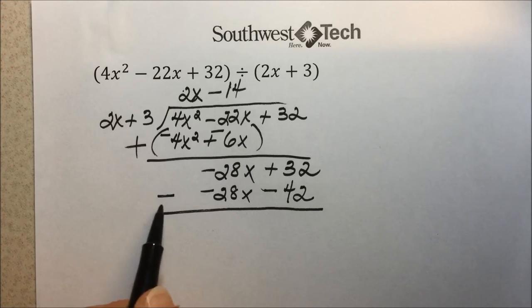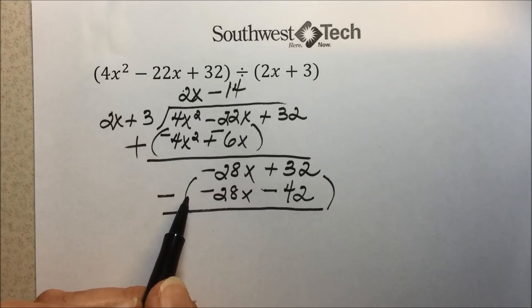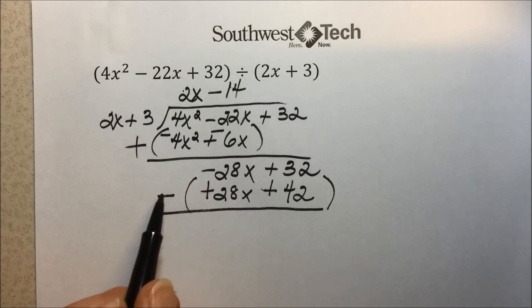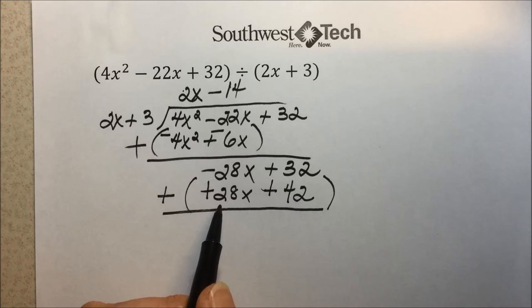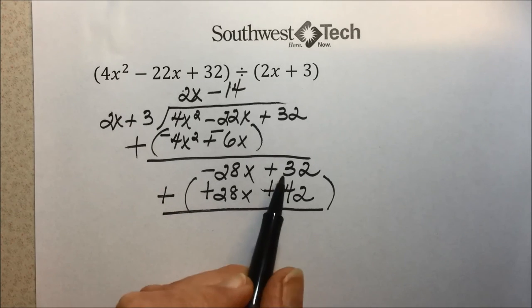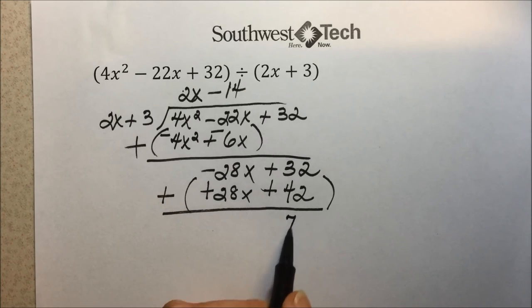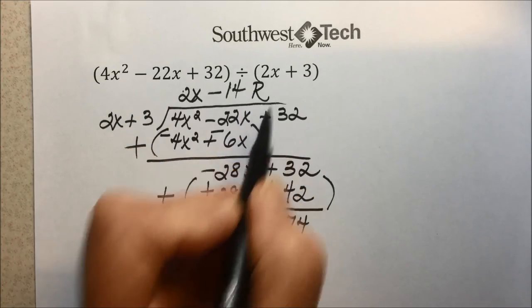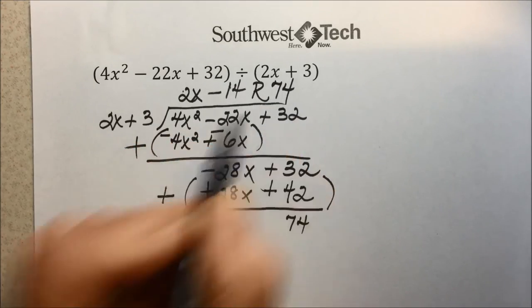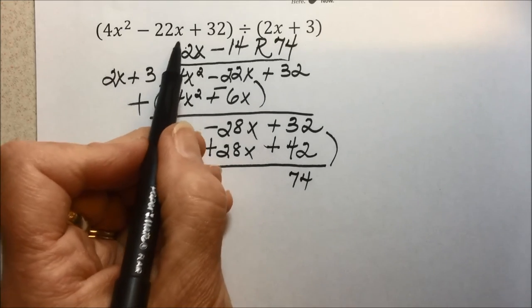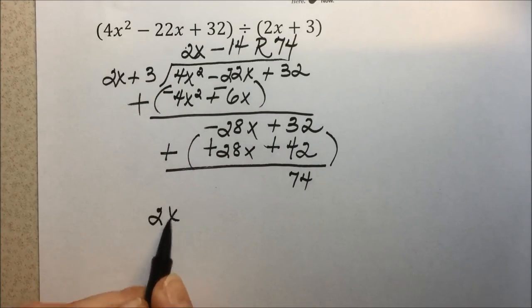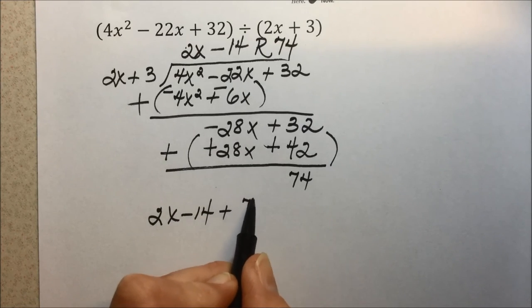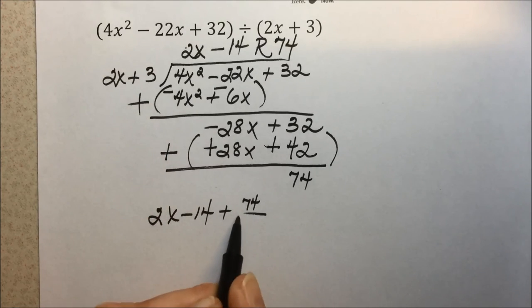We are subtracting. Subtracting using the rule of subtraction is change the signs and add. The 28x's do cancel out because of 1 being positive 1 being negative. That was the whole idea. You always want your leading term to cancel out. But we are adding a 32 plus a 42, which gives us a 74. So we have a remainder. And way back when in elementary, you may have written your remainder as R74. In the algebra world, for our quotient, or our answer to our division problem, we are going to write it as 2x minus 14 that we found, plus the remainder as the fraction or rational expression of 74 over 2x plus 3.